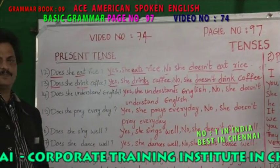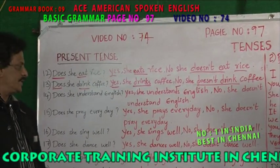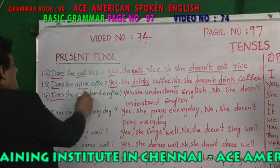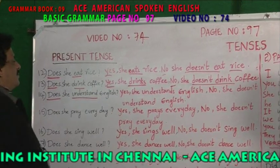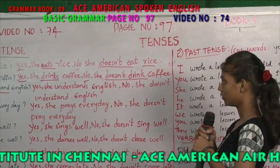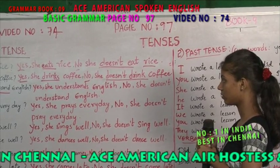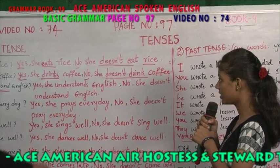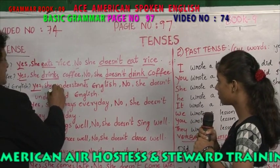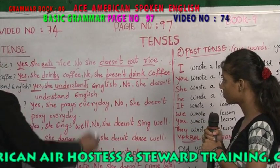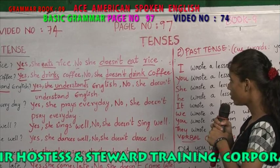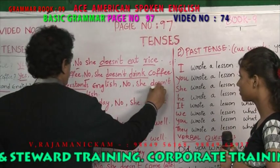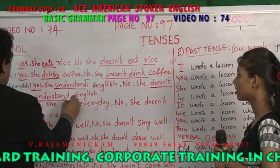Fourteenth question: does she understand English? Doesn't understand is the present tense form. The answer: yes, she understands English. No, she doesn't understand English.